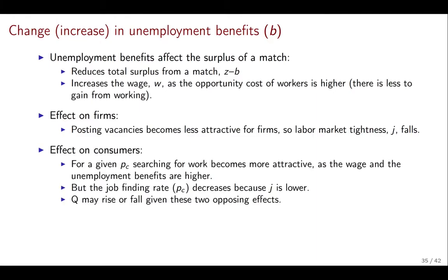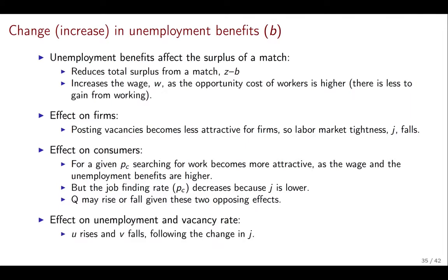Because labor tightness is falling there are going to be two effects on workers. The labor tightness effect means that the probability of contact, PC, is going to go down — the probability of finding a job is going to go down. But wages are now higher, so searching for work becomes more attractive as both the wage and unemployment benefits are higher. Workers want to participate more because participation now has a higher value, but getting a job is going to be harder because the probability of finding a job is going to be lower. So we actually don't know what's going to happen in equilibrium to Q. However, because we know for certain what's happening to tightness, we can know for certain what's going to happen to unemployment and to the vacancy rate: the unemployment rate has to increase and the vacancy rate has to fall.